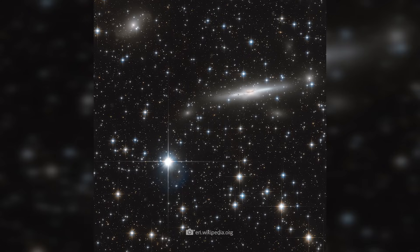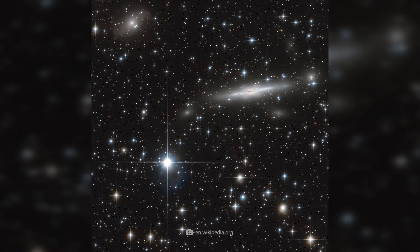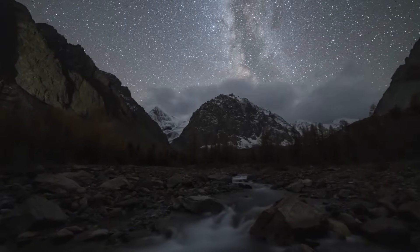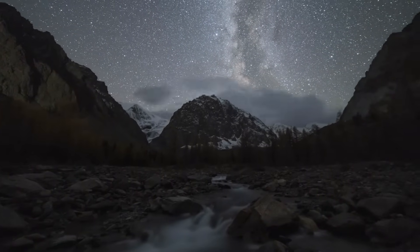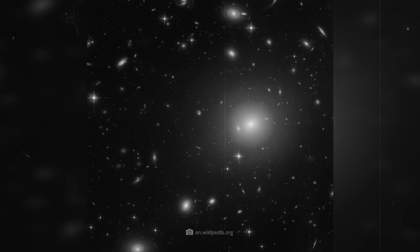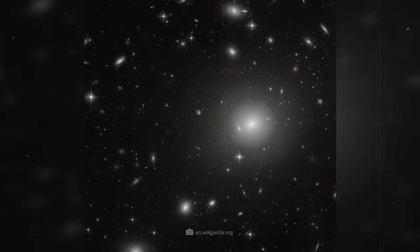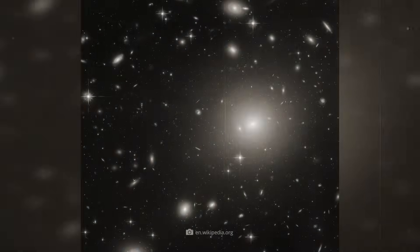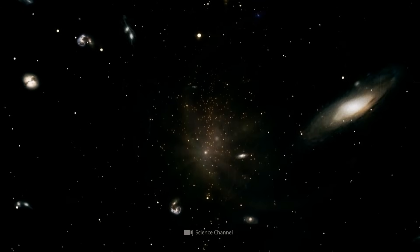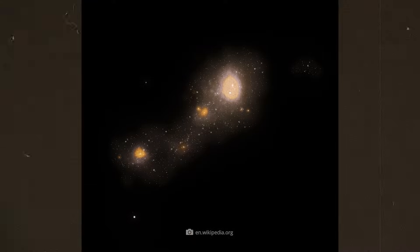Until now, our Milky Way was identified as part of the Laniakea Galaxy Group, but now the latest measurements and mappings turn these assumptions upside down. According to this, our Milky Way could belong to the much larger Shapley supercluster, and this collection of galaxies is larger than anything we can imagine.